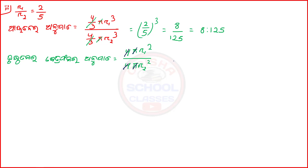R1 by R2 meaning 2 by 5, plus square. That's 2 by 5 squared, meaning 4 by 25. And we will do 4 by 25.